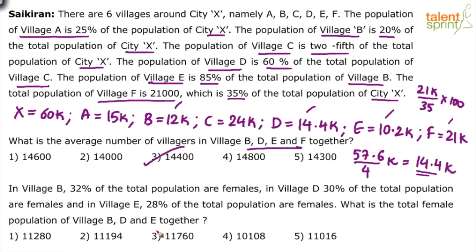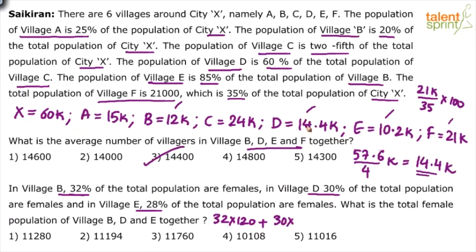Next question: in village B, 32 percent of total population are females; in village D, 30 percent are females; and in village E, 28 percent are females. What is the total female population of B, D, E together? We take 32 percent of B (12,000), 30 percent of D (14.4k), and 28 percent of E (10.2k). That becomes 32 into 120, plus 30 percent of 14,400 which is 144 into 30, plus 28 into 102.